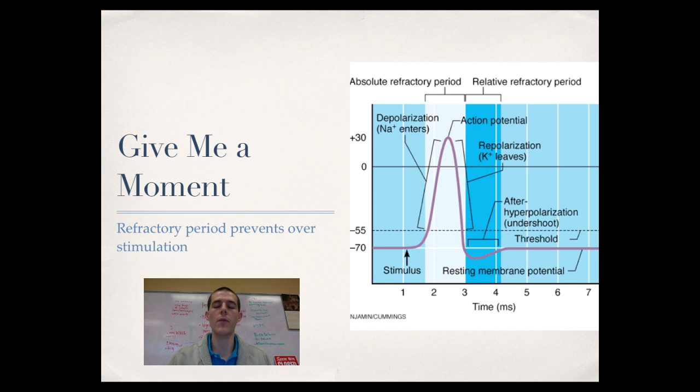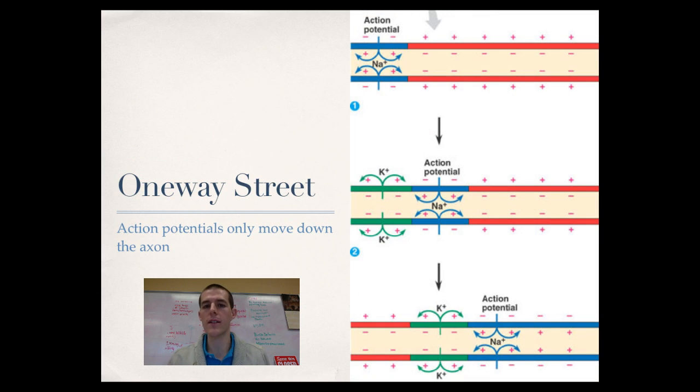Your nerve cells actually need a moment after this action period. There is something called the refractory period. This is a period where the action potential prevents the nerve from being stimulated again. There's absolute refractory period and relative. In the absolute refractory period, you are not going to be able to stimulate that nerve again because it's in the middle of shooting its action potential. However, in the relative refractory period, you might be able to get it to fire again, but probably not. This basically ensures that the nerve has time to reset.